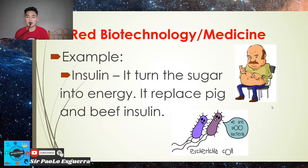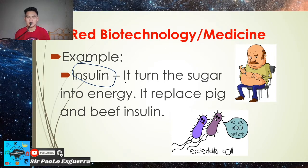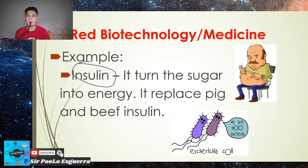An example of red biotechnology is insulin. Insulin turns sugar into energy. For people with diabetes, there is an excess of glucose in the body, and insulin converts that excess sugar into energy. Originally, insulin came from pigs and cows, but scientists later discovered it could be obtained from humans, leading to the invention of human insulin.